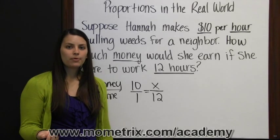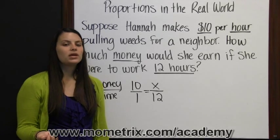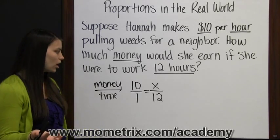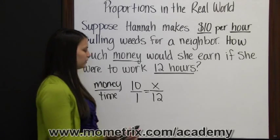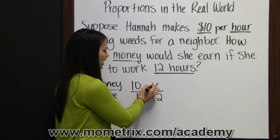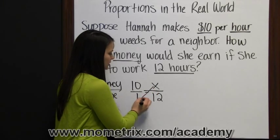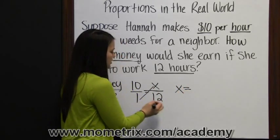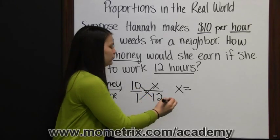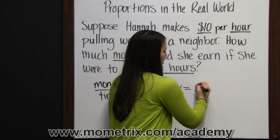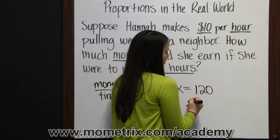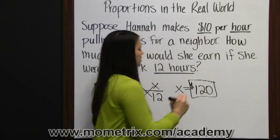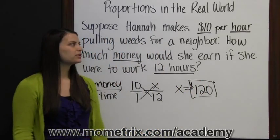Now that we've set up our proportion, we can solve it by using cross products, or just by cross multiplying. We're going to multiply one times x, which is just x, equals 10 times 12, which is 120. Therefore, she would make $120 by working 12 hours.